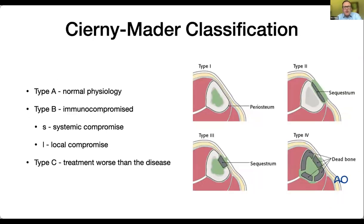Cernia and Mada classified osteomyelitis, and it's a great classification system because it was a combined effort from a surgeon and a microbiologist, so we see this dual approach. We see the anatomical approach — type 1, 2, 3, and 4 — and then the microbiologist's perspective, the normal physiology of the host, running all the way through to patients who are so unwell that having the treatment is probably going to do them more harm than living with the disease. This is a really important way of classifying not just what's going on with the bone, but what's going on with the rest of the patient.